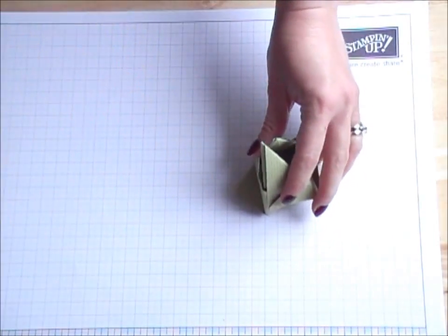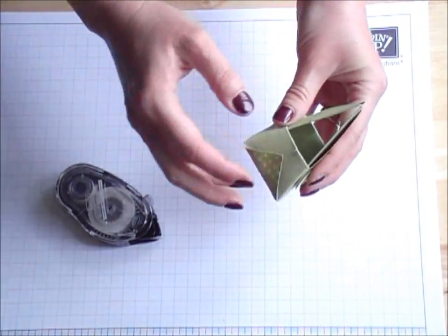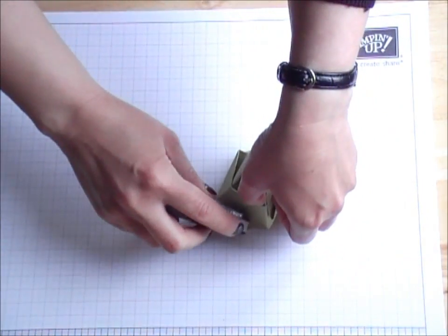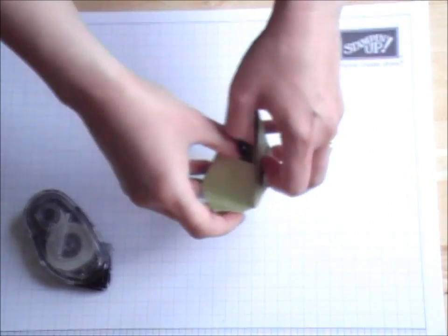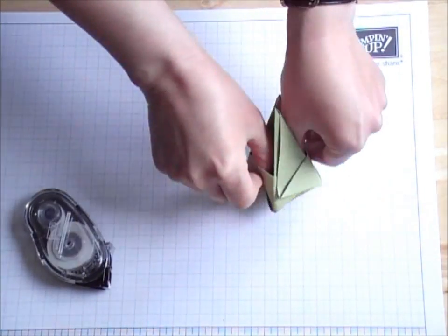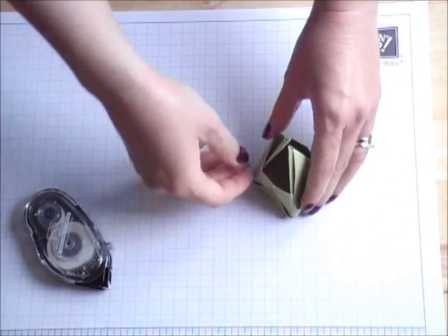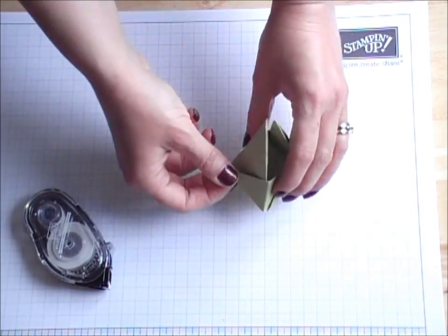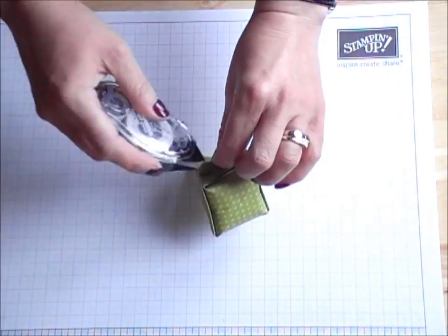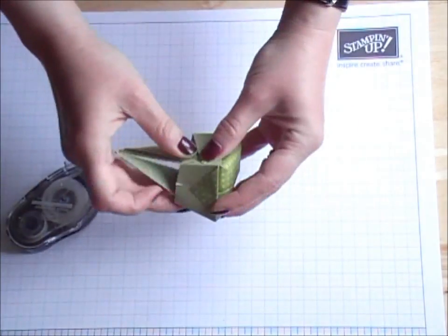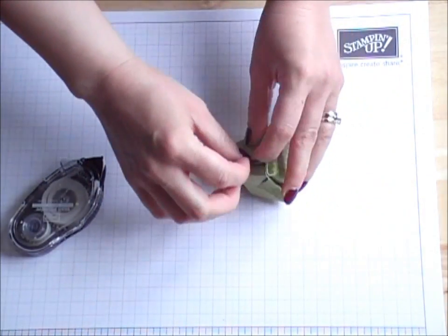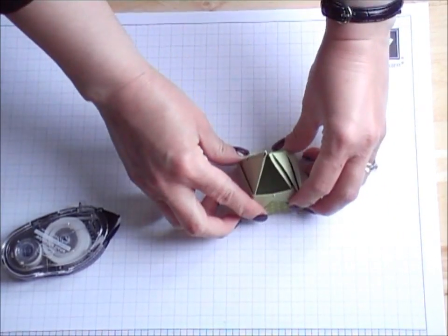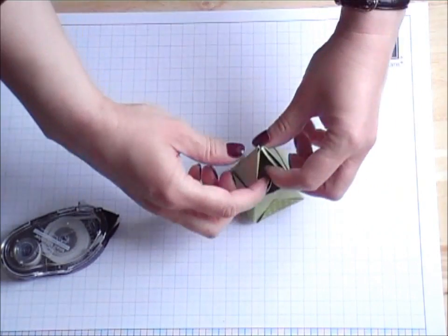You can also put some glue on these little flaps now that you've turned them up. And there you have it—I'll just stick these down a little bit more. There you have it, your basic box.